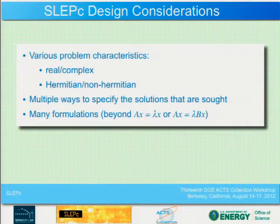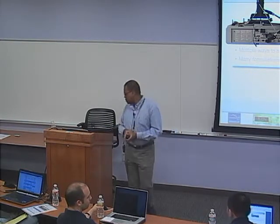Question from Eric: where in physics do quadratic eigenvalue problems arise? The answer is in engineering when we have damping. For example, in eigenvalue analysis of helicopter blades, which can be quite nonlinear.